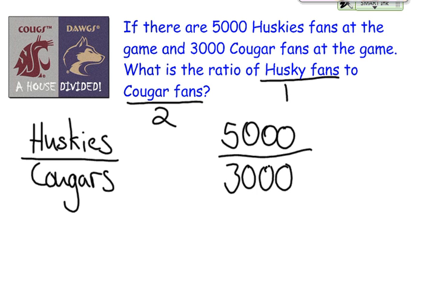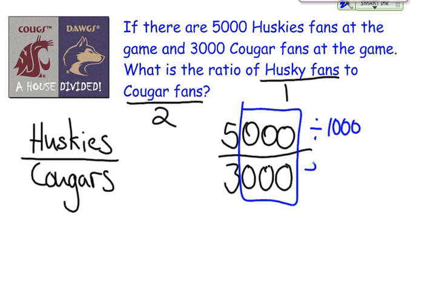But just like before, we need to reduce if possible. Now looking at these, you might think, how am I going to reduce this? However, hopefully you can see a very simple comparison. You see all these zeros here? Those can all be eliminated. And to do that, you're actually going to divide by 1,000. So 5,000 divided by 1,000 is going to give us 5, and 3,000 divided by 1,000 is going to give us 3.